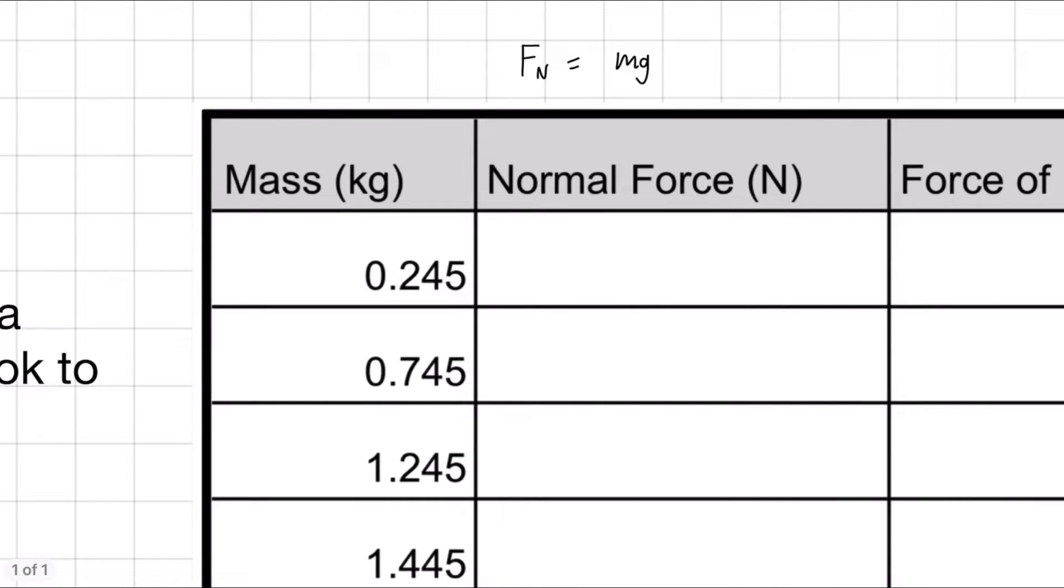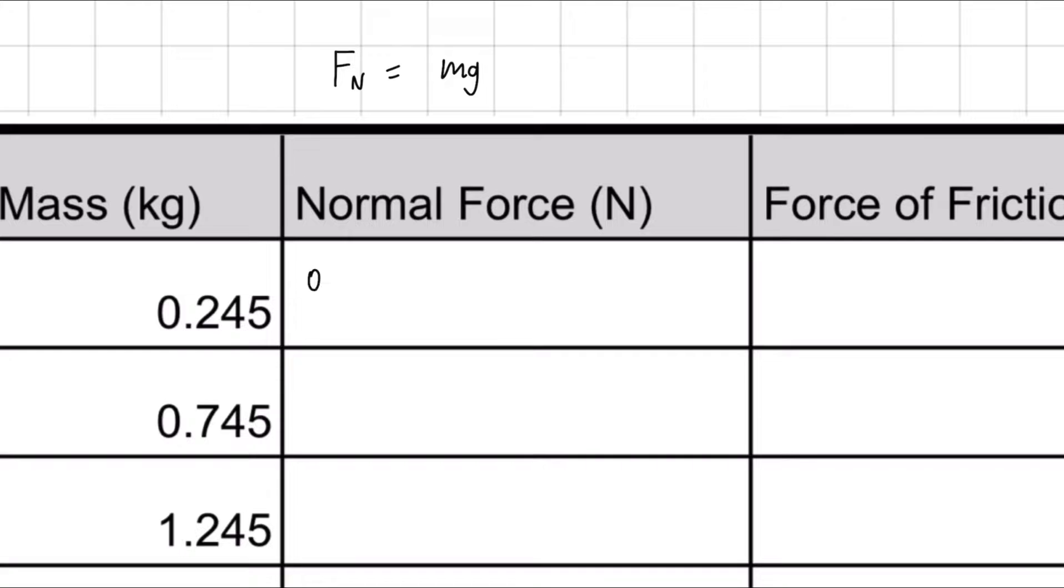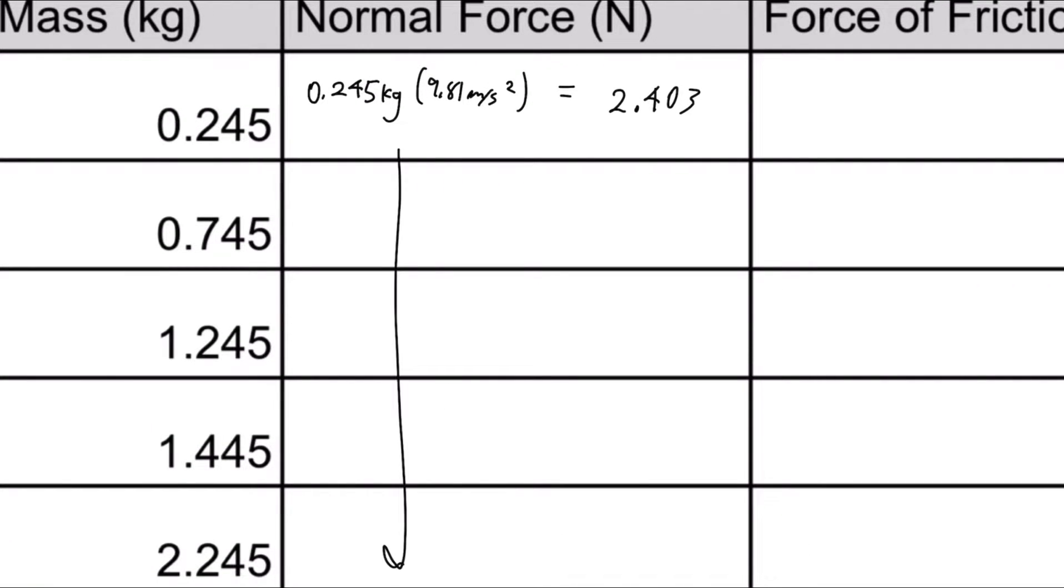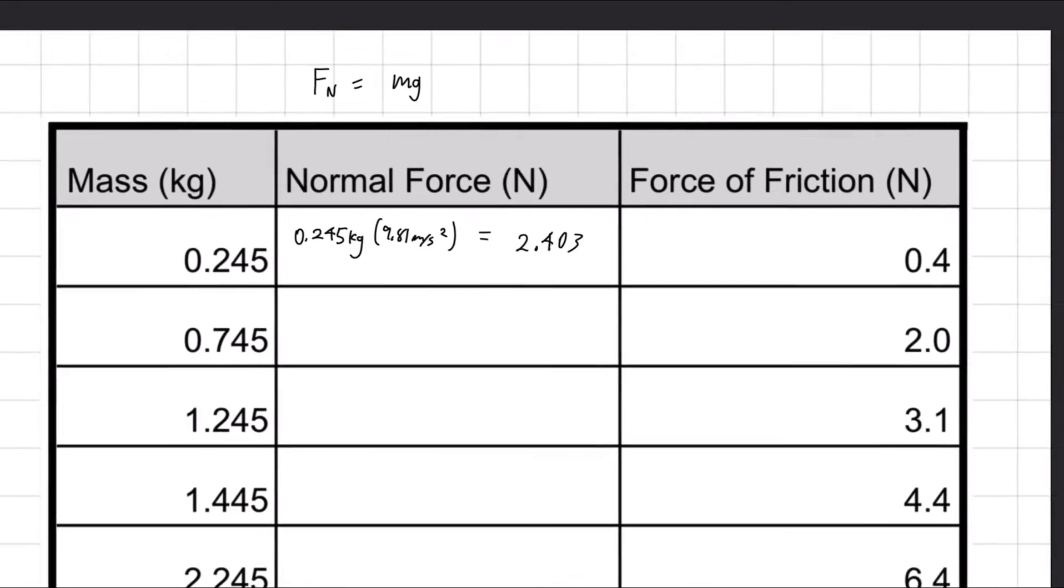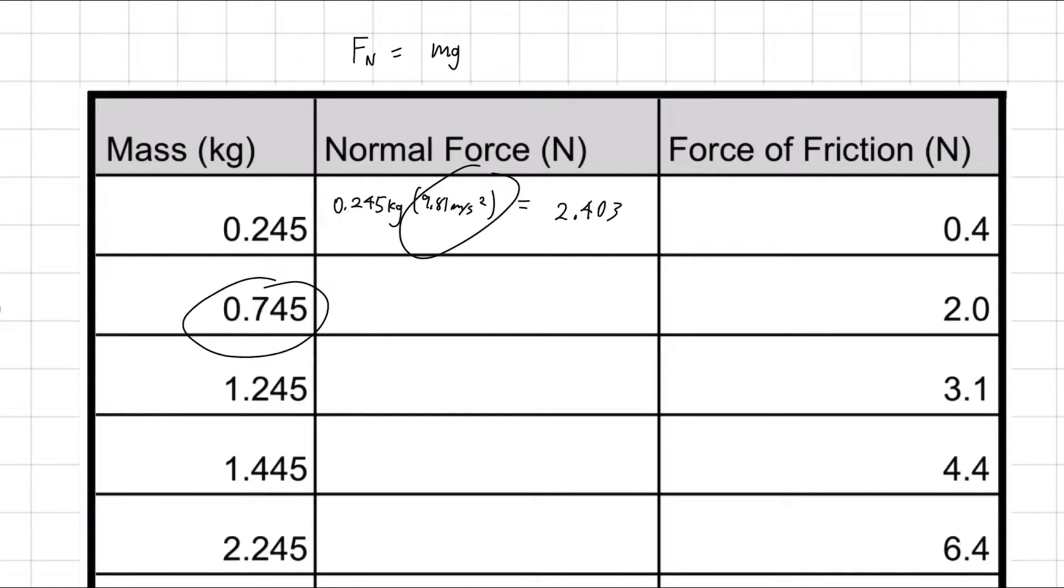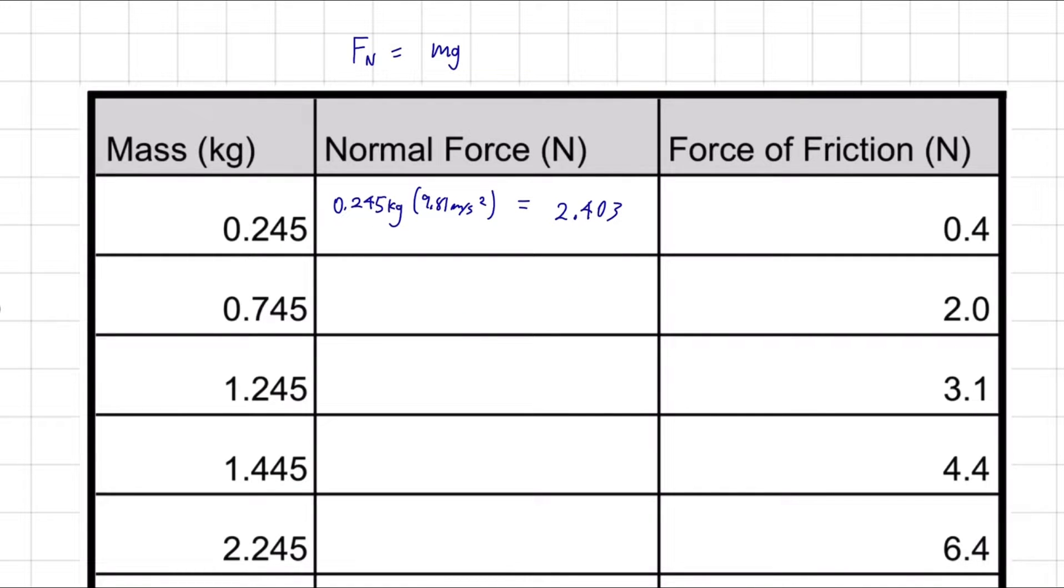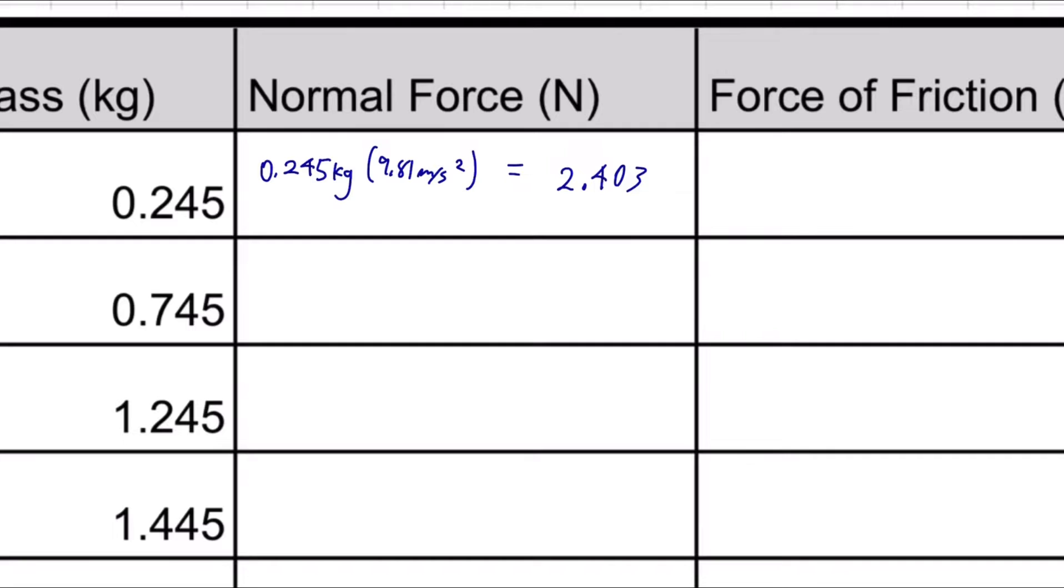We're given a mass, and we know that g is 9.81 meters per second squared. So 0.245 kilograms times 9.81 meters per second squared equals, just type this into your calculator, 2.403 newtons. We're going to apply that same formula all the way down this column. I'm not going to rewrite this formula because it's the exact same. It's going to be 0.745 times 9.81.